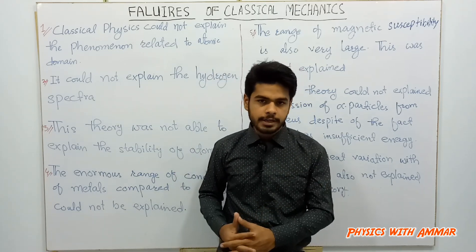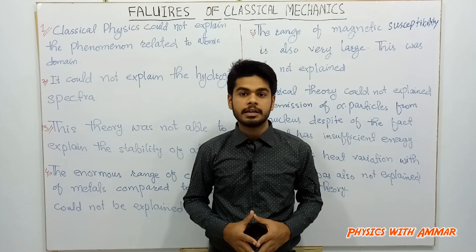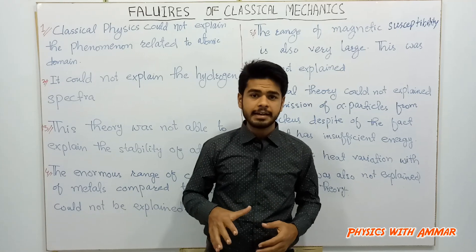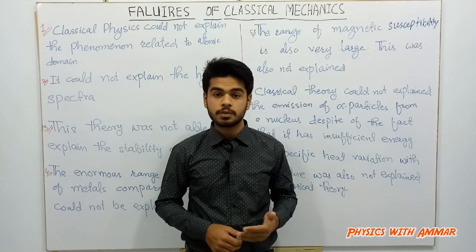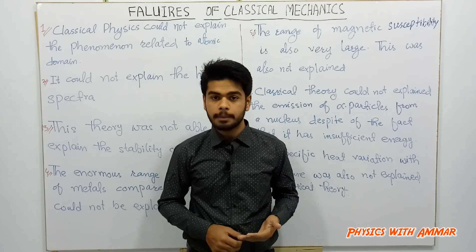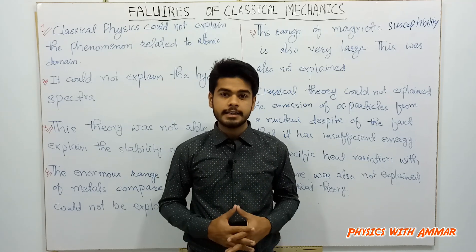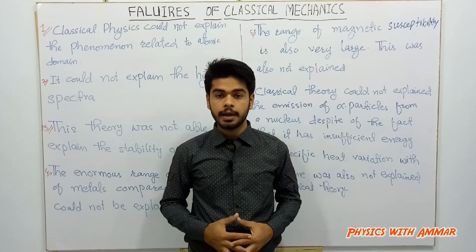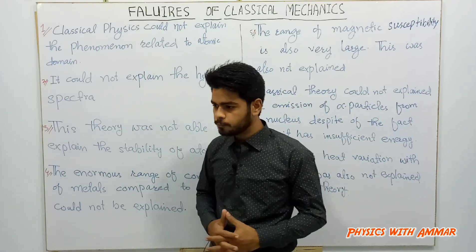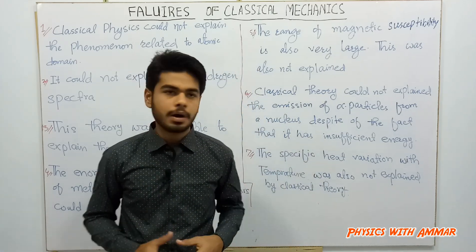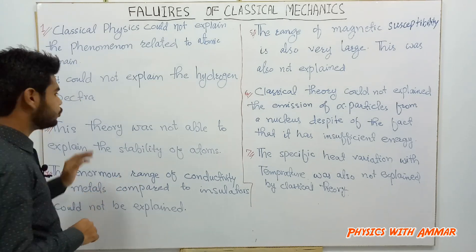We are starting without wasting our time. Today our topic is the failures of classical mechanics — what were the failures of classical mechanics? Today it is a well-established branch and you can say it is modern physics. So the first drawback of classical mechanics was that classical physics could not explain the phenomena related to the atomic domain.